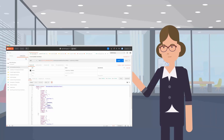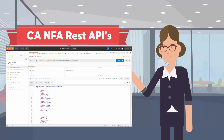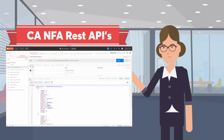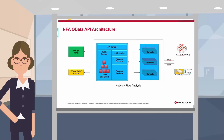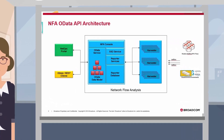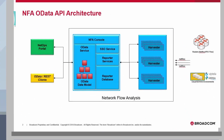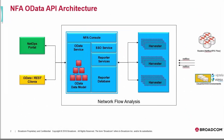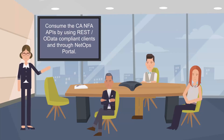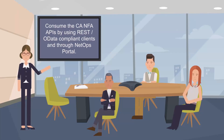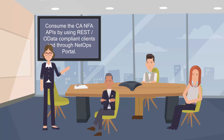The CA Network Flow Analysis REST API is provided by the OData Services that runs on the CA-NFA console. OData Service connects to the NFA console and harvester databases and enables data retrieval using the simplified OData data model. You can consume the CA-NFA APIs by using REST OData-compliant clients and through NetOps Portal.